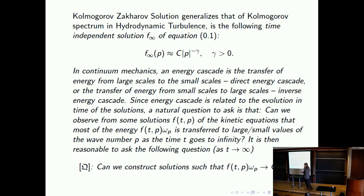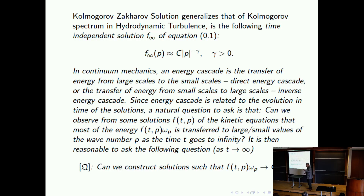The claim is that what we would like to show is that this function is actually a distribution, and this distribution converges to a delta function at infinity. A natural way of describing the process of energy cascade is to look at the dynamics in the space of distributions. Even if you start with something nice and smooth, look at the dynamics in this more general space and see if there are solutions with the property that after finite or infinite time, the support is at the point at infinity.